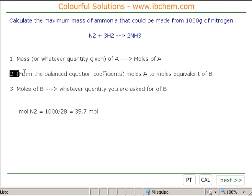The next thing is stage 2. Look at the balanced equation coefficients. Well, that means the numbers that are used to balance the moles in the equation. In this particular case, we can see here there's one nitrogen, three hydrogens, make two ammonias.